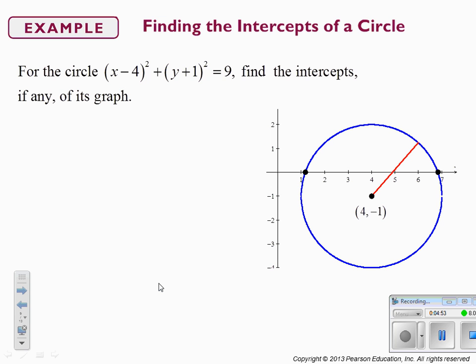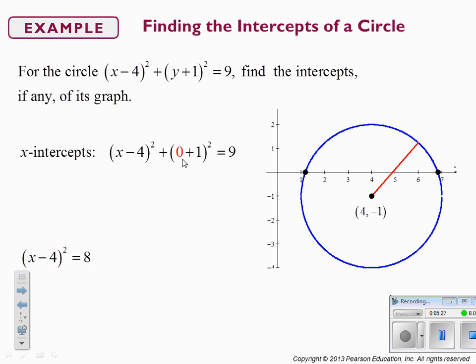If you have the circle we just graphed and you want to find its intercepts, you look at where it crosses the x and y axes. This circle does not cross the y-axis at all, so it has no y-intercepts. But it crosses the x-axis at two distinct points. When I plug in zero for y to find my x-intercepts, I simplify down and get (x minus 4) squared, then take the square root.